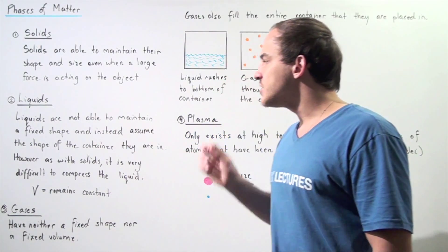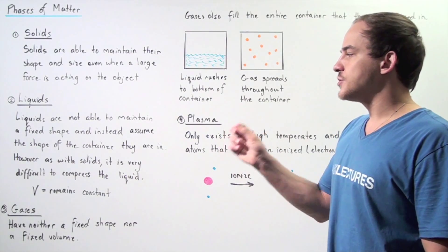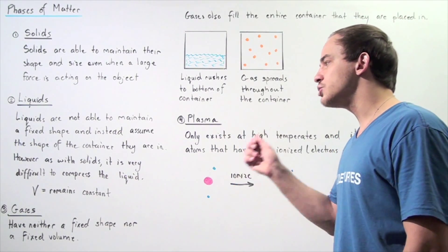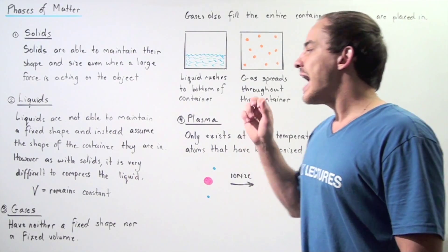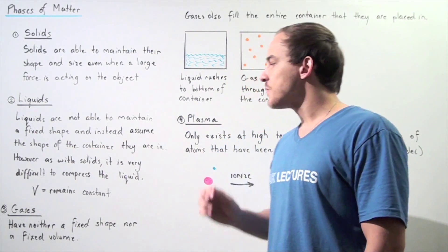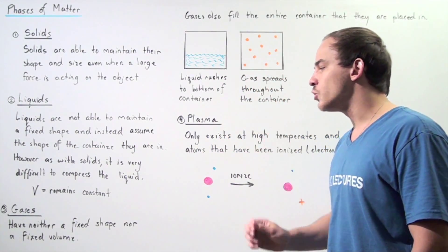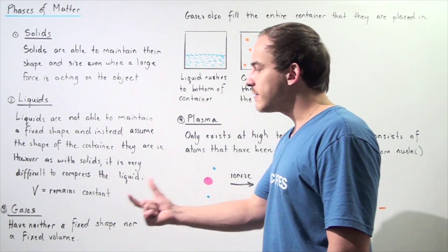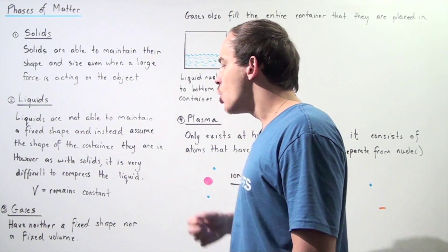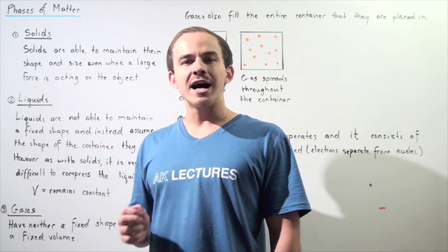So, liquids are not able to maintain a fixed shape and size and instead assume the shape of the container they are in. However, as with solids, it is very difficult to compress the liquid and that means the volume of our liquid remains relatively constant.